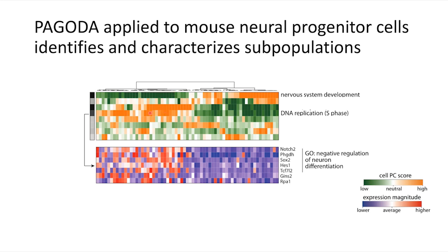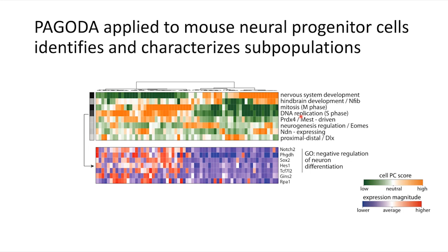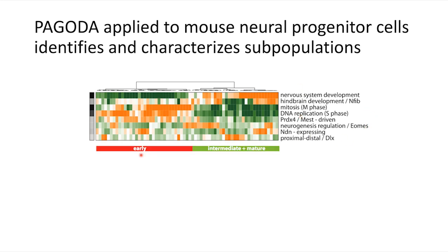Alternatively, we can focus on a different aspect of transcriptional heterogeneity — one being upregulated in a complementary subset of cells — that is driven by pathways and genes related to the negative regulation of neural differentiation and other DNA replication-related processes. Based on this approach, we can interpret and annotate the rest of the pathway clusters. Based on our prior knowledge regarding transcriptional processes in neural progenitor cells, we can interpret one major subpopulation as the more early neural progenitors still undergoing different phases of the cell cycle, and the complementary population as more intermediate and mature neural progenitors expressing genes associated with neuronal maturation and nervous system development.